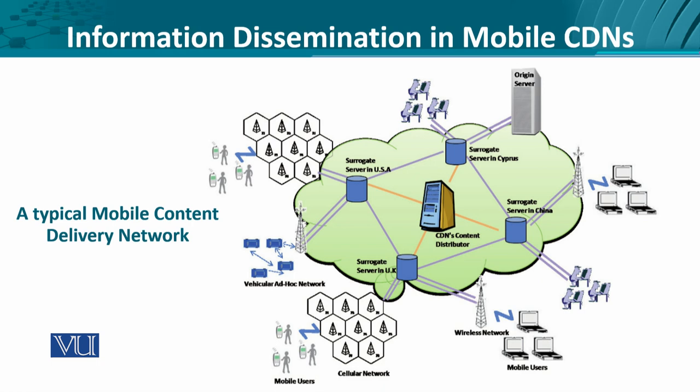Let's take an example of a surrogate server in the United Kingdom. There's a cellular network — say 4G LTE — offering internet connectivity to the mobile users. Intuitively and by evidence, it can be seen that the mobile users must get the content replicated in the surrogate server in the United Kingdom.